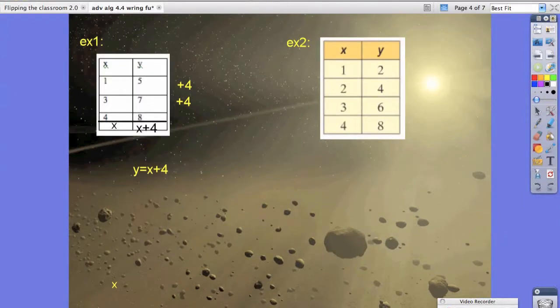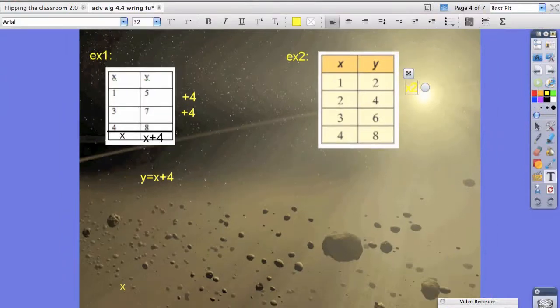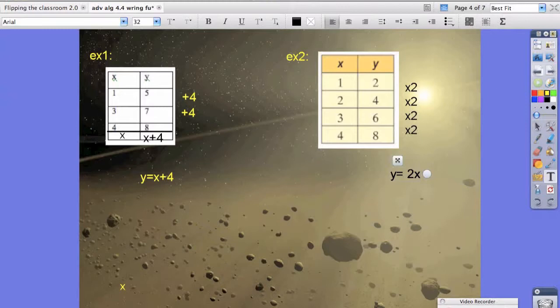Same rules apply for example 2. How did we get from 1 to 2, 2 to 4, 3 to 6, 4 to 8? Hopefully you've noticed that we're really just multiplying by 2 in all of these instances. Multiply by 2 the whole way throughout. So what we can say in this instance is that y equals 2x. Whatever our value is for x, we just multiply by 2. So we've just written some very basic function rules.